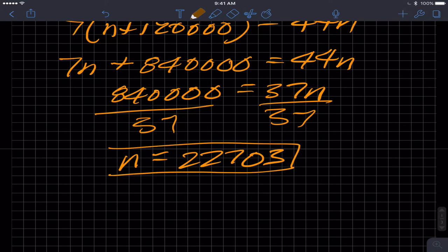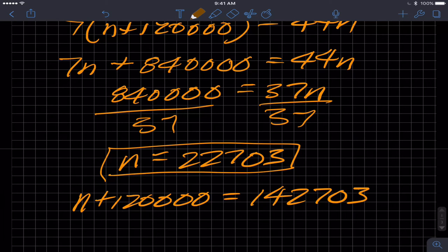You might think that you were done because you solved the equation, but the question asked for both companies, so we have to figure out what this value is, which luckily is just simple addition. We get 142,703, and that's average user acquisition per quarter. Same units. All right, that's it. Thank you.